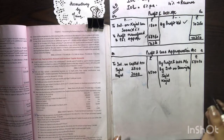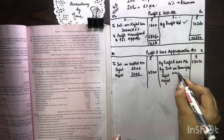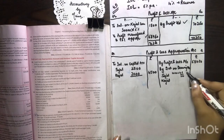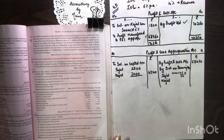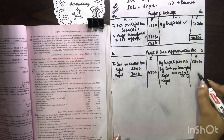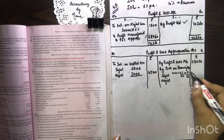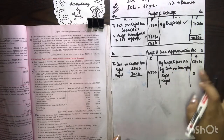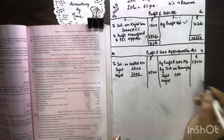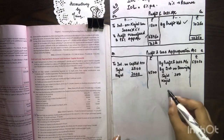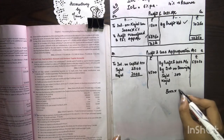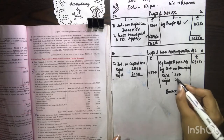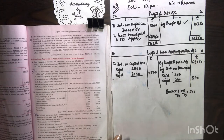Then, by interest on drawings — we have charged interest on drawings. Sajal's drawings are 10,000, and 10,000 at 6% — 6/100 — and if the drawing date is not known, it is assumed that we always take the average of six months. So that calculation gives us 300. Kajal's drawings are 8,000 into 6/100 into 6/12, which gives us 240. The total of both is 540 rupees.